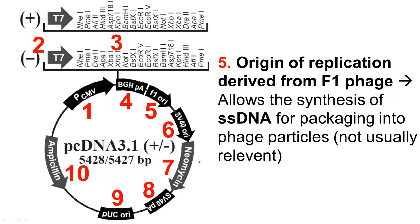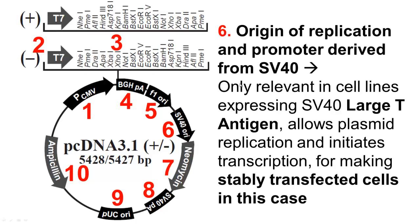Numbers 6, 7, and 8 kind of go together. Number 6 is the SV40 origin of replication and promoter. SV40 is simian virus 40, and this region contains the origin of replication and promoter sequence. It's only relevant in cells that continuously express the SV40 large T antigen, such as HEK 293T cells. The large T antigen will bind to this SV40 origin region, initiating replication of the plasmid using the host DNA-dependent DNA polymerase and also initiating transcription using the host RNA polymerase machinery.